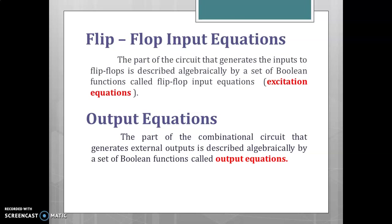A sequential circuit consists of a combinational circuit and a flip-flop. The part of the combinational circuit that generates the input of the flip-flop can be described algebraically by a set of Boolean functions referred to as the flip-flop input equations or excitation equations. Similarly, the part that generates the external output can be described by a set of Boolean functions referred to as output equations.